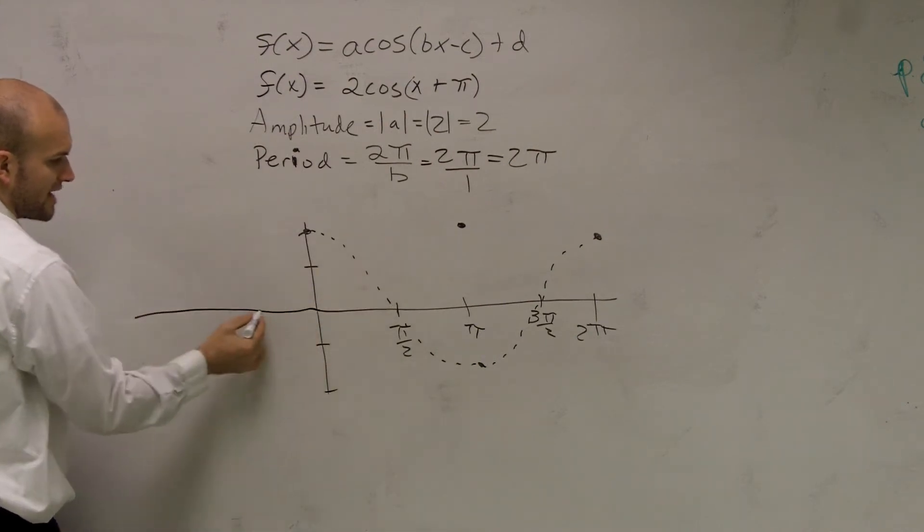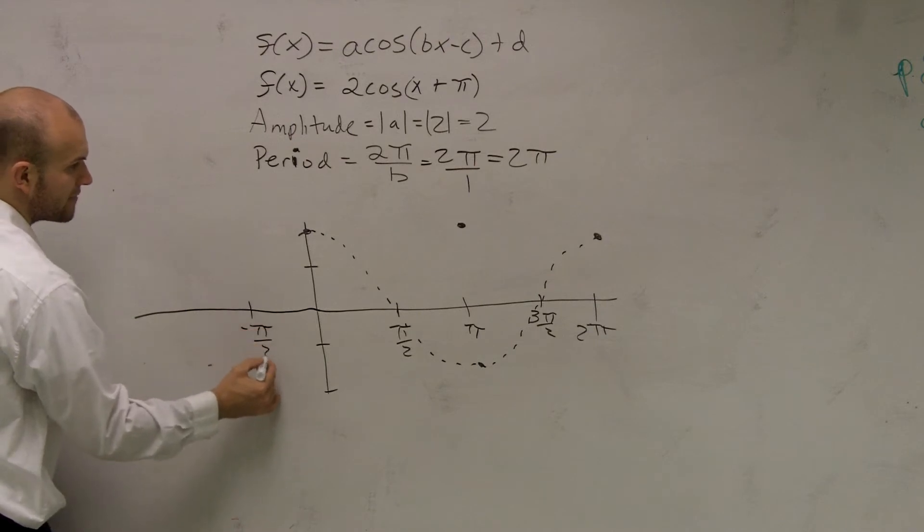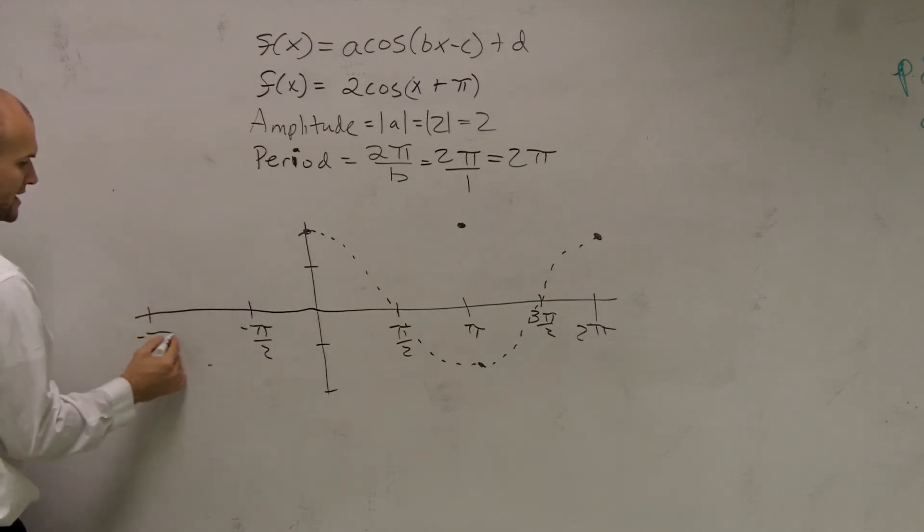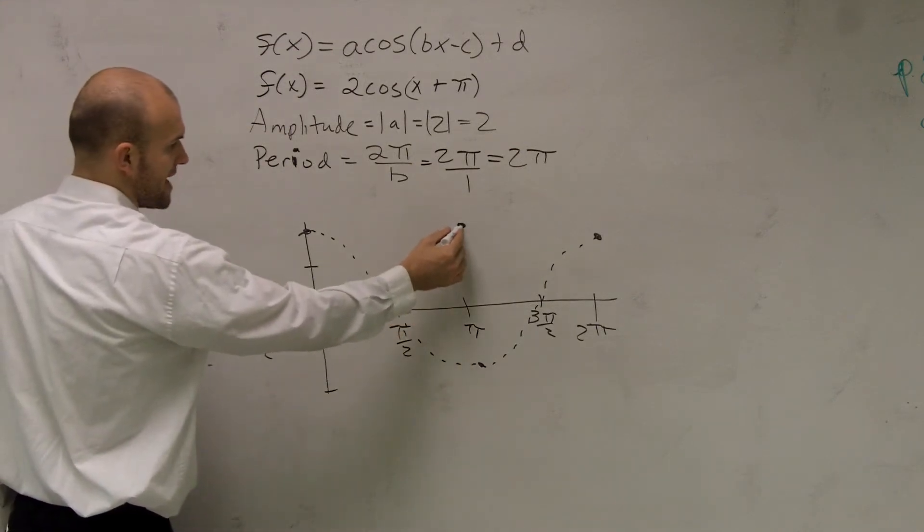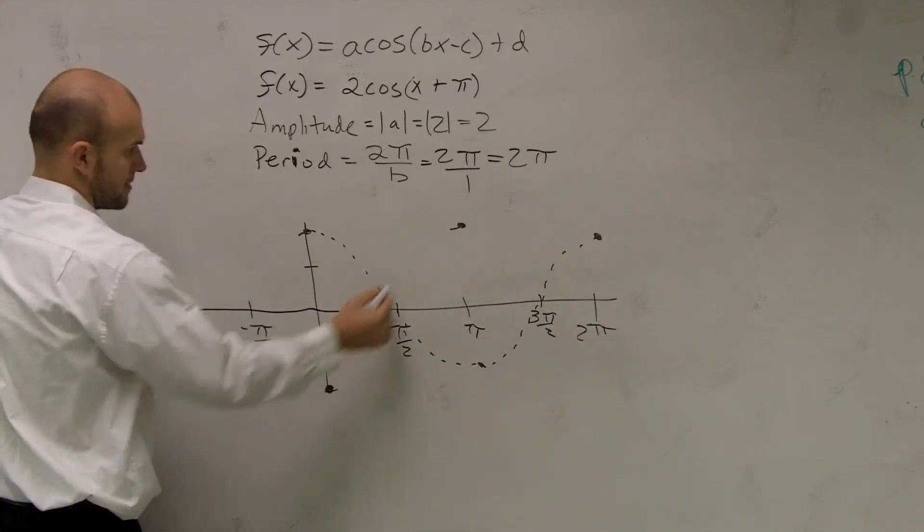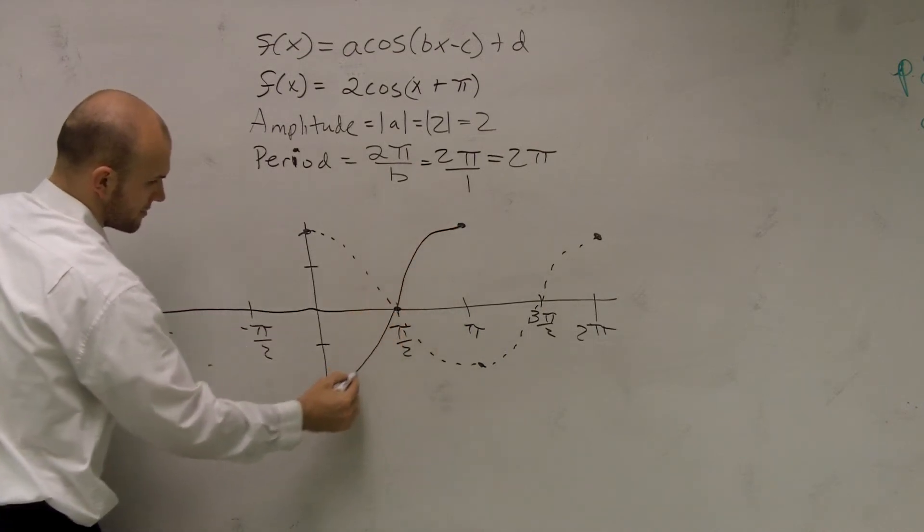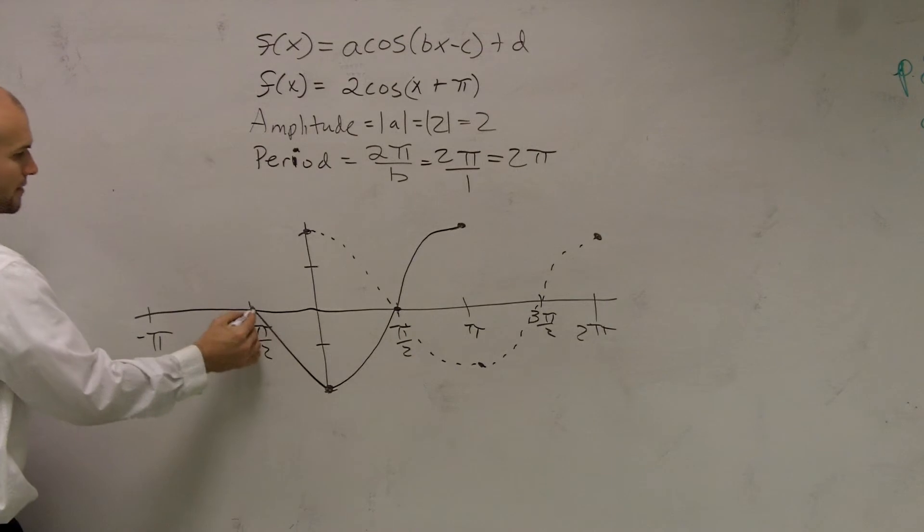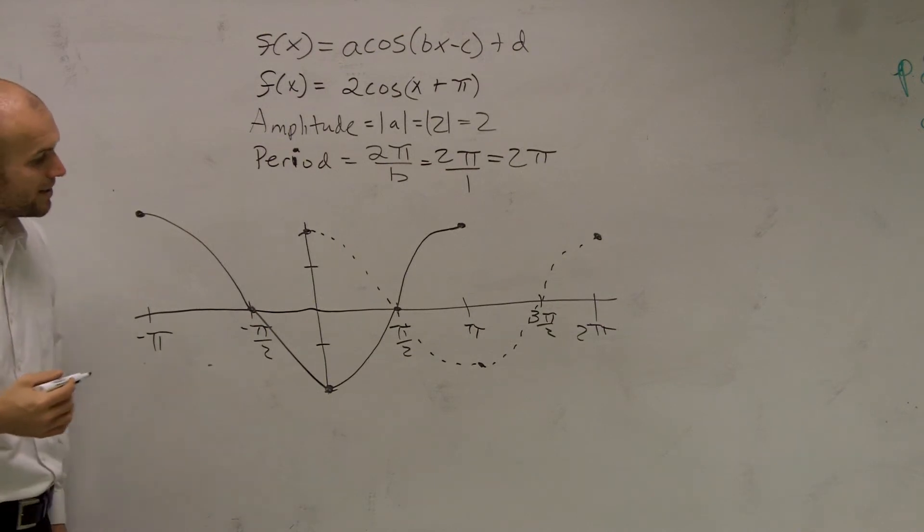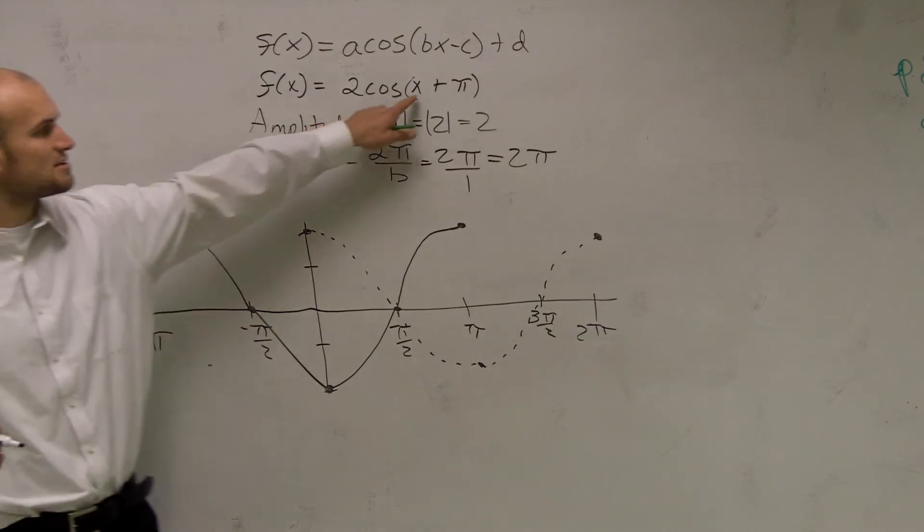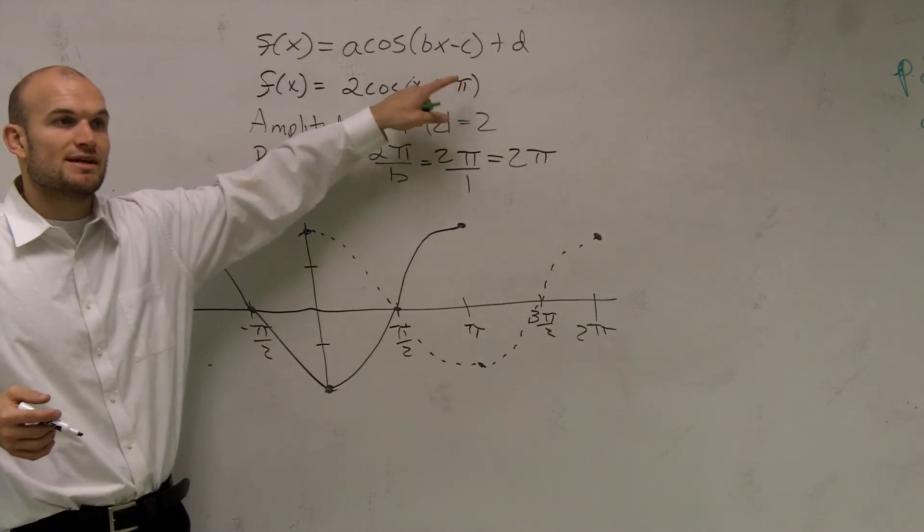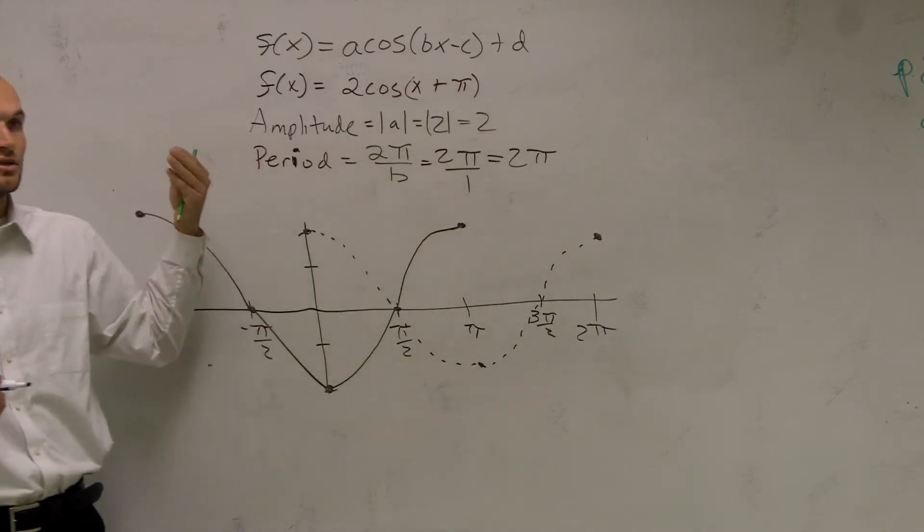But now I'm going to just do the negative version of these. Negative π over 2. Negative π. So if I just kind of follow back what I was doing, I would have cross, down, up, over. And that looks like a very ugly cosine graph. But it's because it's x plus π. So that means I'm going to have a translation. I'm going to be shifting to the left.